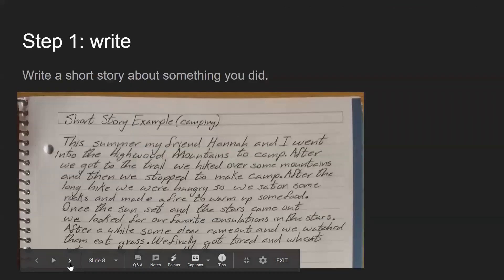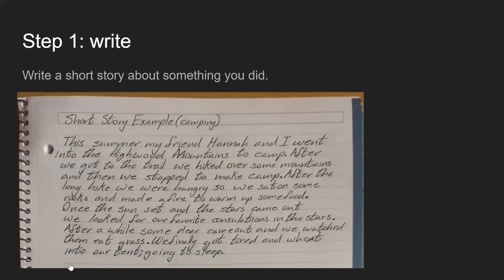For the first step, we write out a short story about something you did — similar to how the ancient humans did it, we'll write our own narrative. Mine was about going camping with a friend in the mountains where we hiked, made a fire to eat, watched the sunset and the stars, looked for our favorite constellations — another way of navigating, as stars are heavily featured in paintings. And then some deer came out, so I wrote about that and then going to bed.